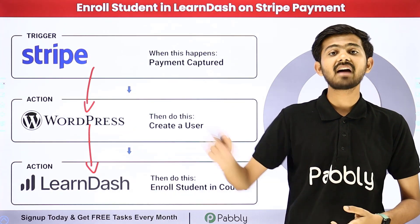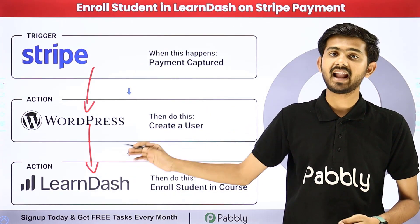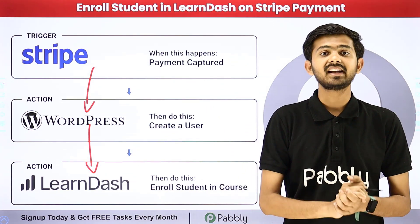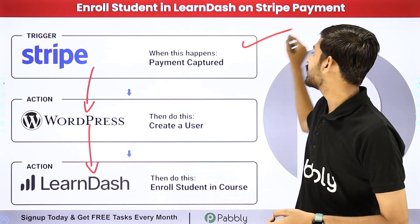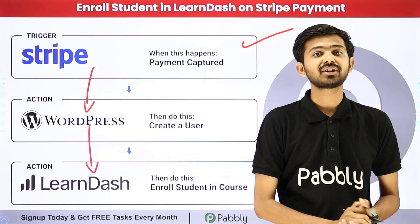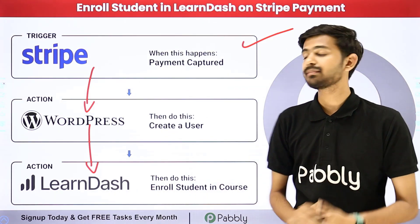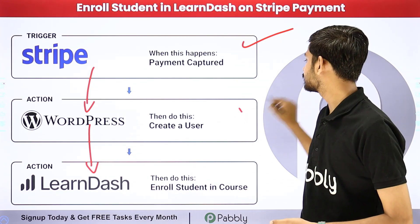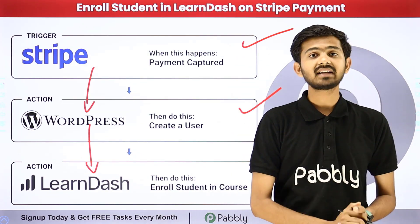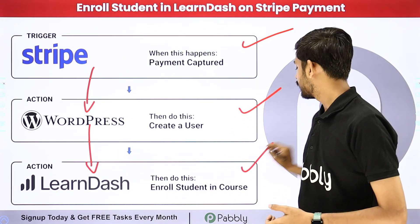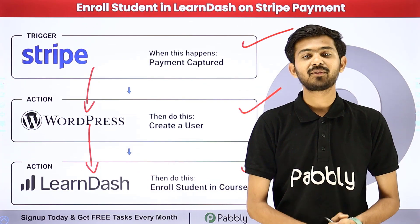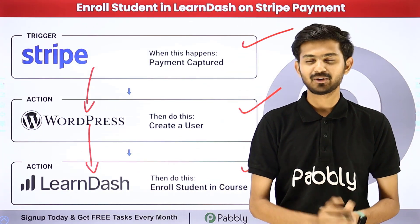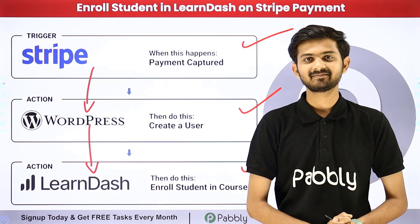To build this connection between Stripe, WordPress, and LearnDash, I'm going to use Pabbly Connect, which is an amazing software for automation and integration. In Pabbly Connect, I have to use Trigger and Actions. The Trigger application is going to be Stripe, the first Action application will be WordPress, and the last will be LearnDash. Let me take you to my computer screen.